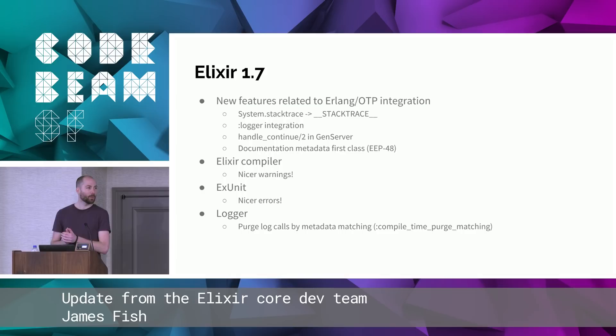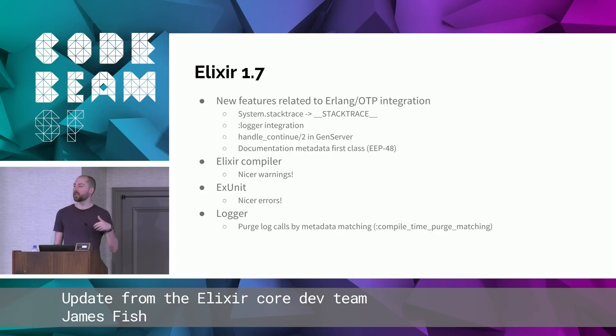Elixir 1.7 was mainly integrating with OTP changes — the new logger in OTP, the new way of handling stack traces, handle_continue for GenServer, nicer warnings, and nicer errors. Elixir is always trying to improve warnings and errors to give a nice user experience so you can actually understand completely what went wrong with your application.